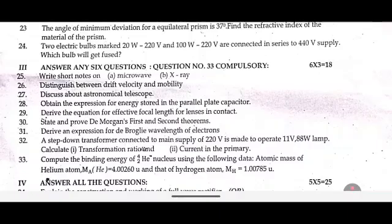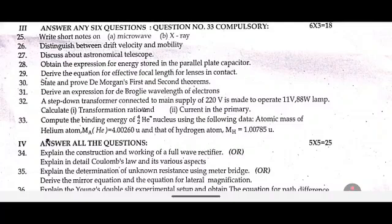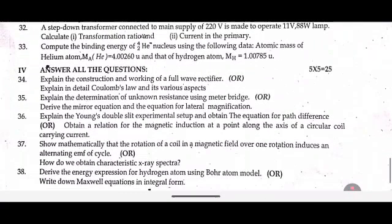Thirty-one: Derive an expression for de Broglie wavelength of electrons. Thirty-two: A step-down transformer connected to a main supply of 220 V is made to operate an 11 V, 88 W lamp. Calculate: (1) transformation ratio; (2) current in the primary. Thirty-three: Compute the binding energy of helium-4 nucleus using the following data — atomic mass of helium atom is given.